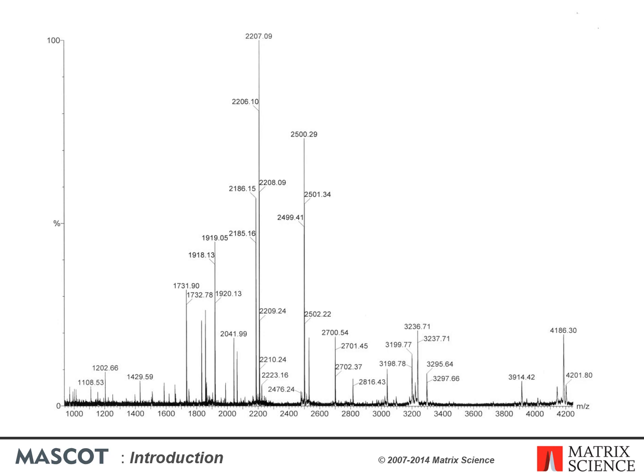In a peptide mass fingerprint, it's the mass values of the peaks that matter most. The peak area or intensity values are a function of peptide basicity, length, and several other physical and chemical parameters. There's no particular reason to assume that a big peak is interesting and a small peak is less interesting. The main use of intensity is simply to distinguish signal from noise. Mass accuracy is important, but so is coverage — better to have a large number of mass values with moderate accuracy than one or two with very high accuracy.